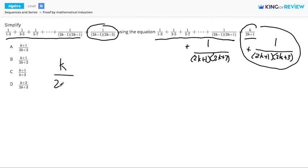So the right side says k over 2k plus 1 plus 1 over 2k plus 1 times 2k plus 3. To add two fractions, they must have a common denominator.